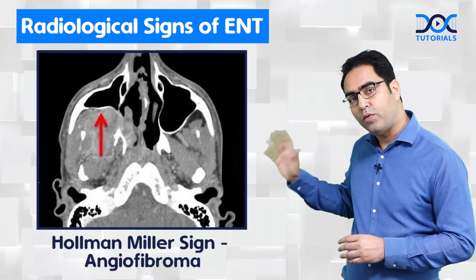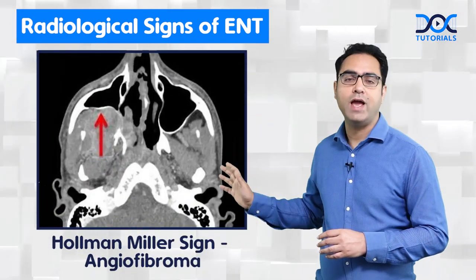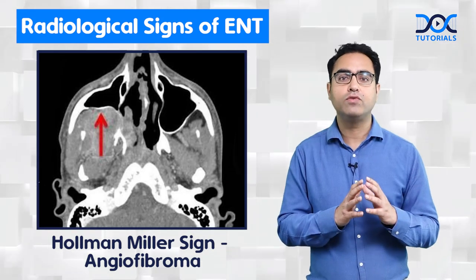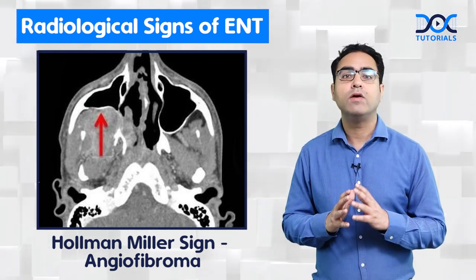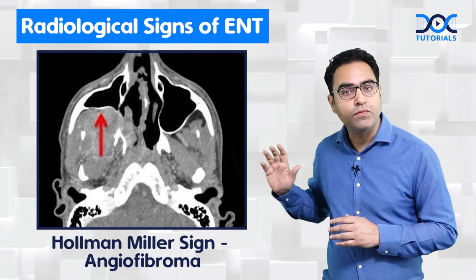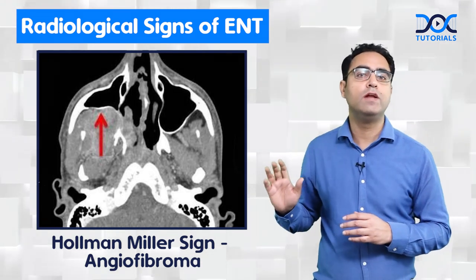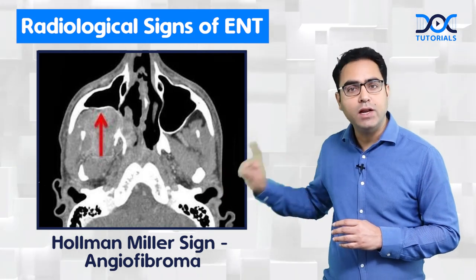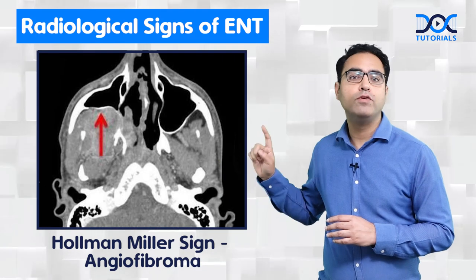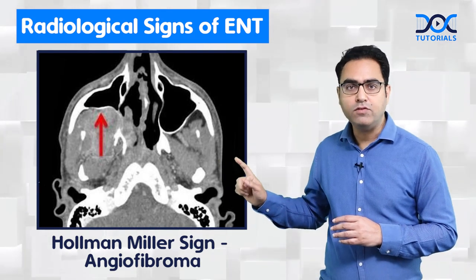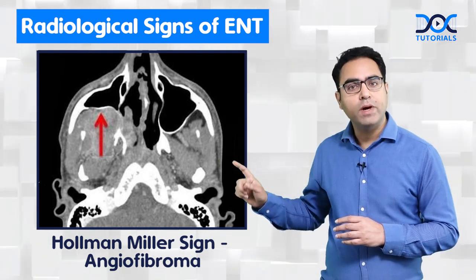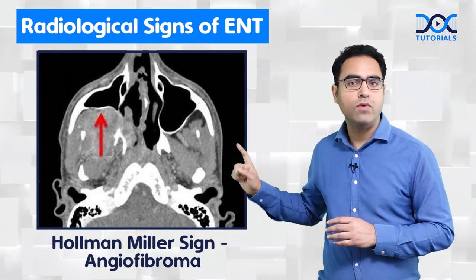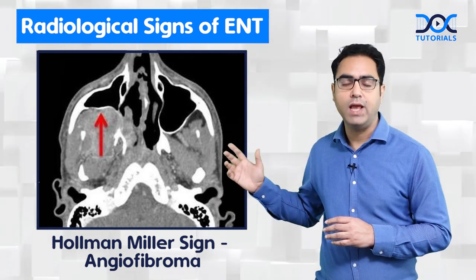The third sign is the Hallman-Miller sign, or antral sign, which is seen on CT scan of a patient suffering from angiofibroma. It is the anterior bowing of the posterior wall of the maxilla — meaning when the tumor is growing behind the maxilla, it pushes the posterior wall of the maxilla forwards.